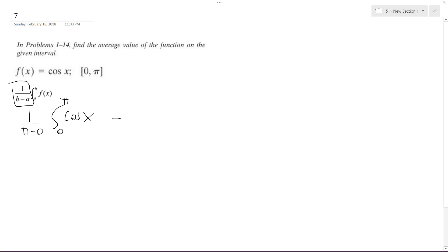The integral of cosine of x is going to be sine of x, and one over pi is what we're multiplying it by. We're going from zero to pi. So, one over pi, and then sine of pi minus sine of zero.